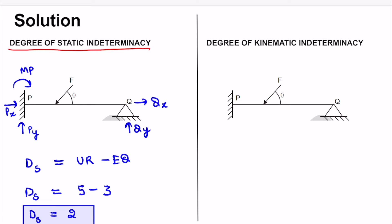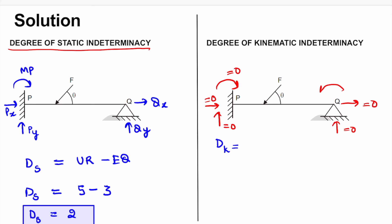The degree of kinematic indeterminacy is the number of unknown displacement quantities. At point P, the fixed support means vertical displacement is zero, horizontal displacement is zero, and rotation is also zero. At point Q, vertical displacement is zero and horizontal displacement is zero, but there is an unknown rotation theta Q. So the only unknown displacement quantity is theta Q, giving a degree of kinematic indeterminacy of one.